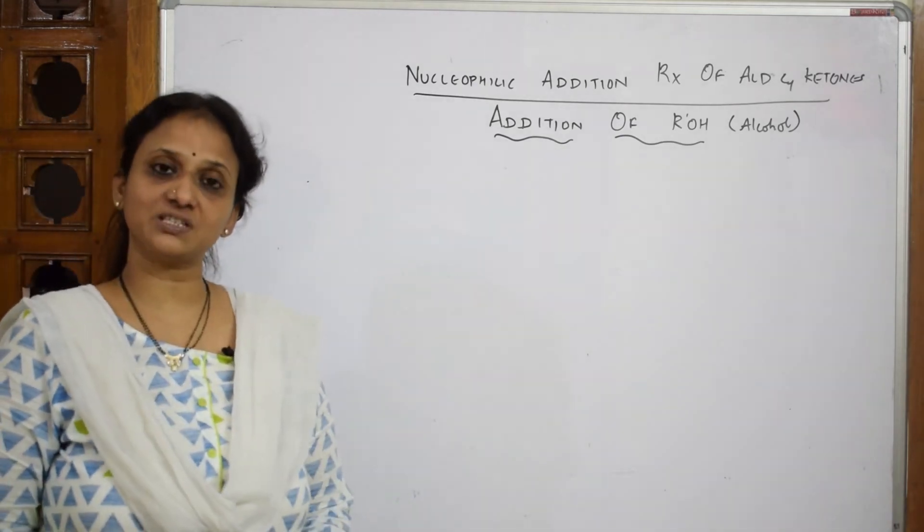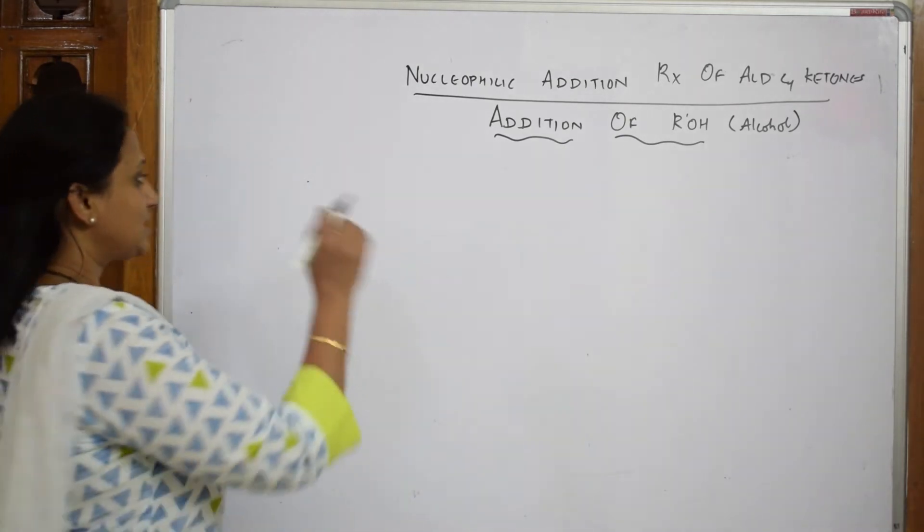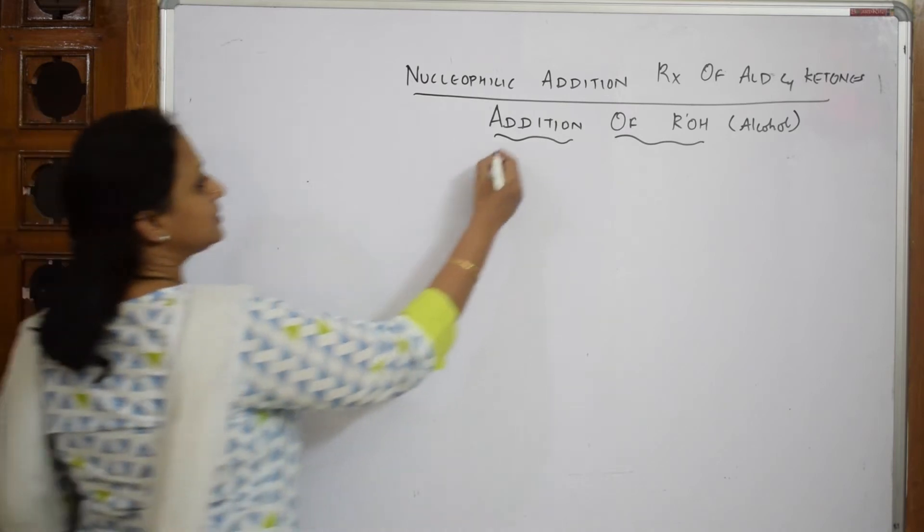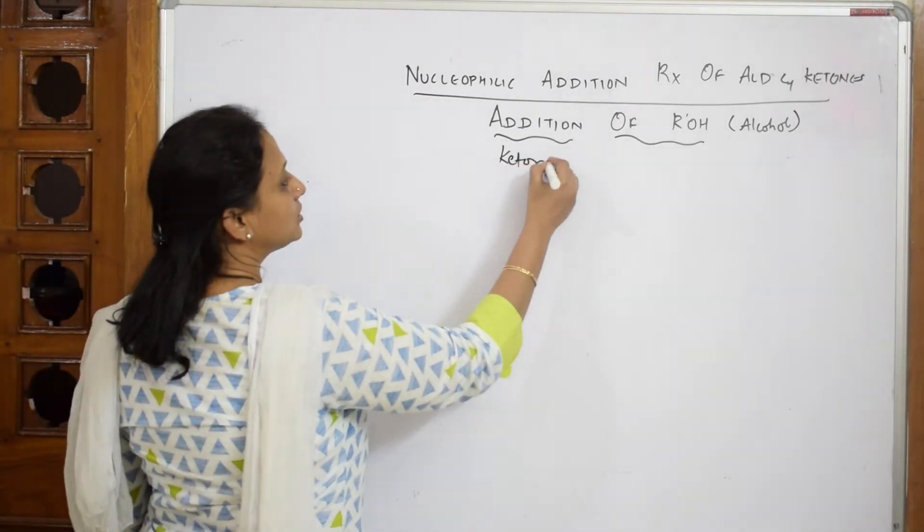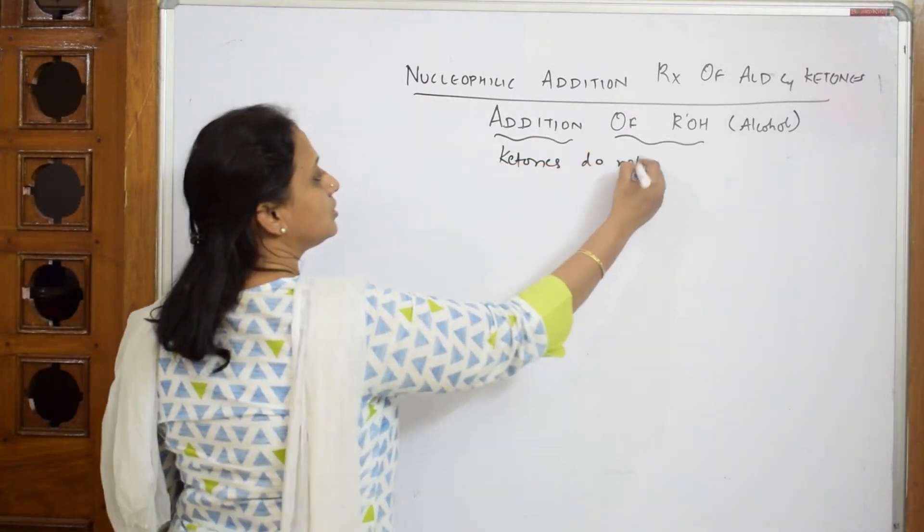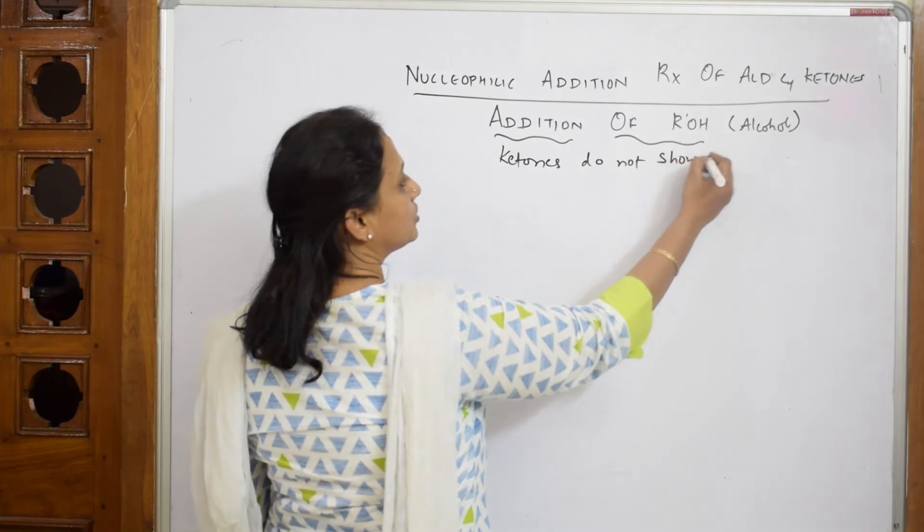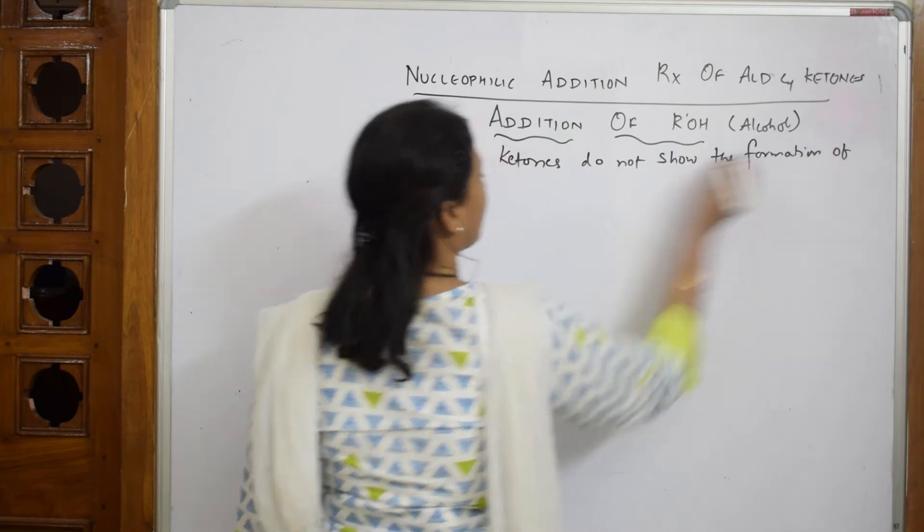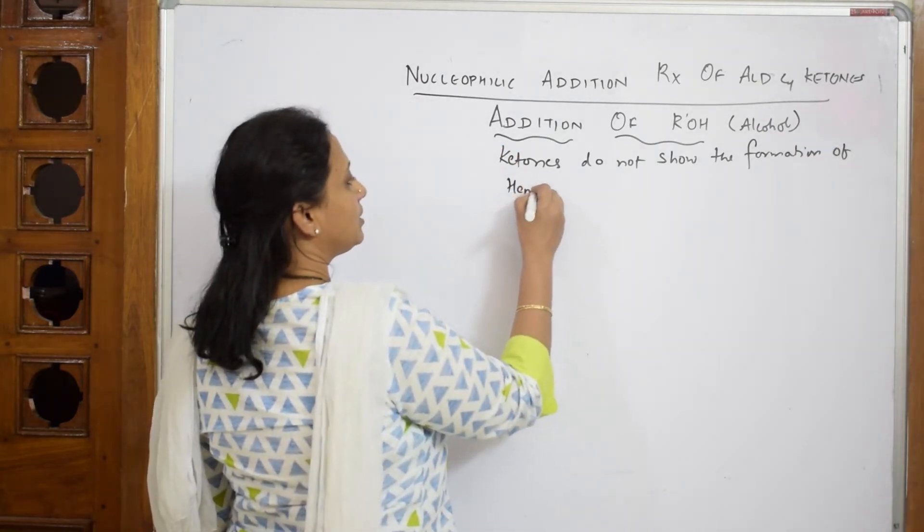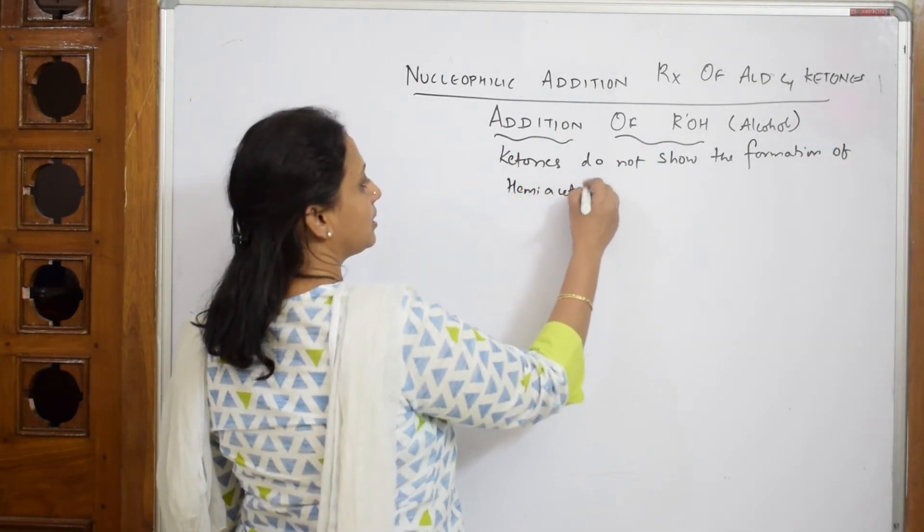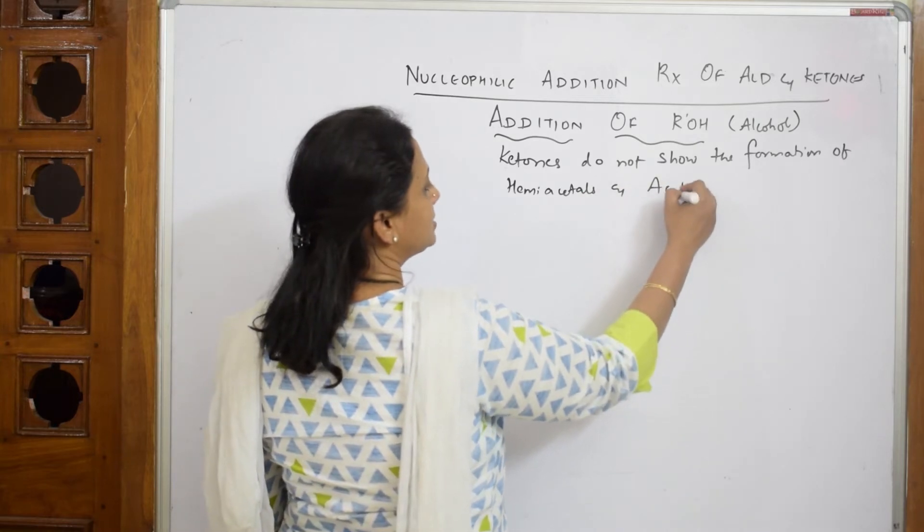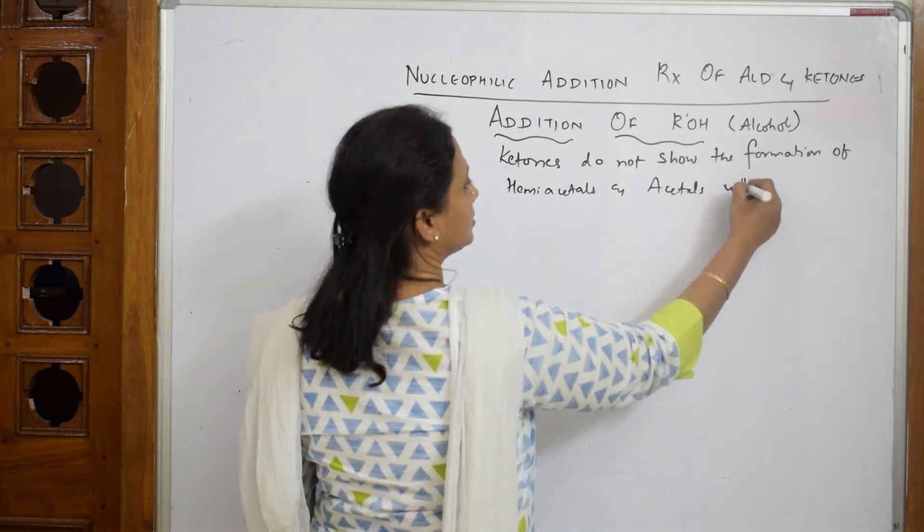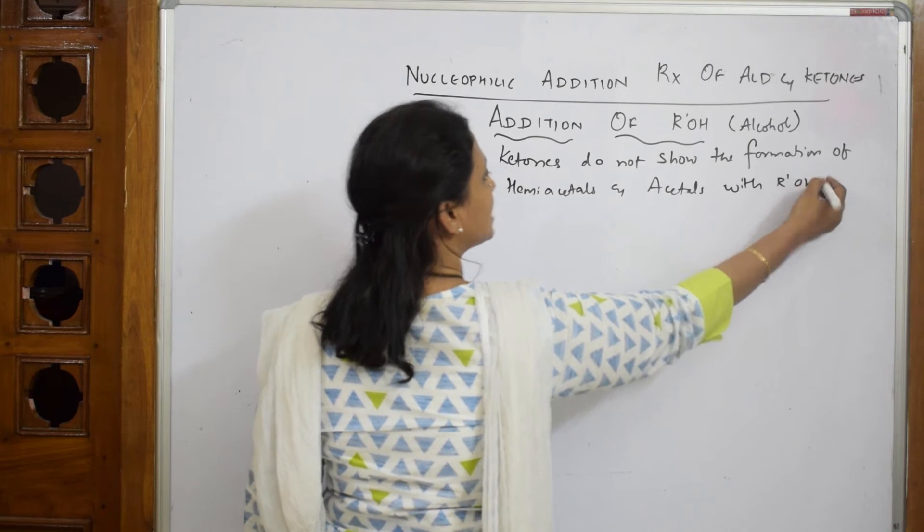First we will do the reaction with aldehyde. Ketones do not show the formation of hemiacetals and acetals with ROH. Remember this, I will explain later.